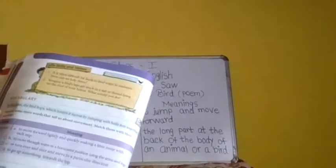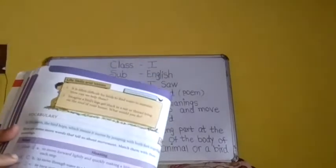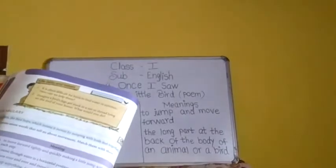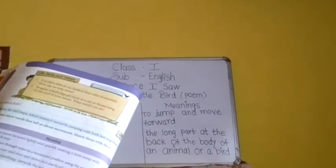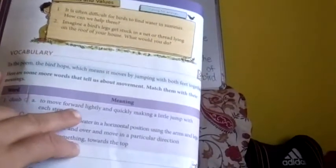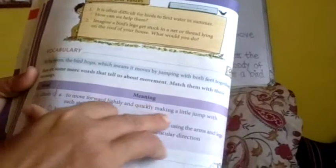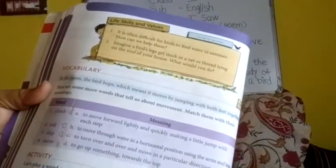Roll means rolling, that means to turn over and turn over. Then skip, I am going to read all these meanings also. To move forward lightly and quickly, making a little jump with each step, this is the meaning of skip.